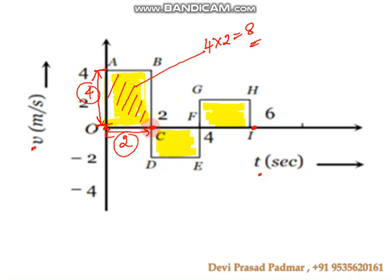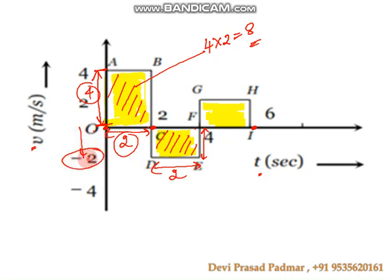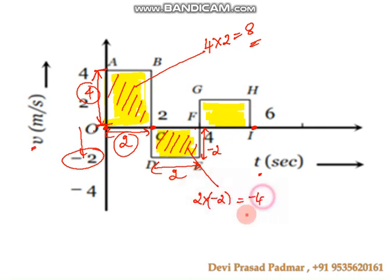For the second rectangle from 2 to 4 seconds: the length is 4 minus 2, which is 2. The breadth is along the negative axis, from 0 to minus 2, so we consider minus 2. Therefore, length into breadth is 2 into minus 2, which equals minus 4.